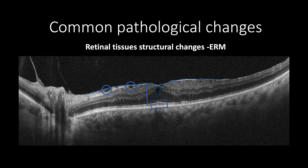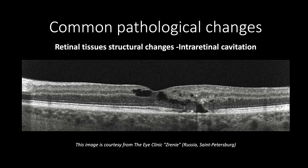Intra-retinal cavitation may appear as intra-retinal cystic changes without an increase in retinal thickness. Intra-retinal cavitation is not formed due to intra-retinal tissue fluid accumulation. Instead, cavitations are formed due to degenerative processes such as in macular telangiectasia type 2 or age-related macular degeneration.